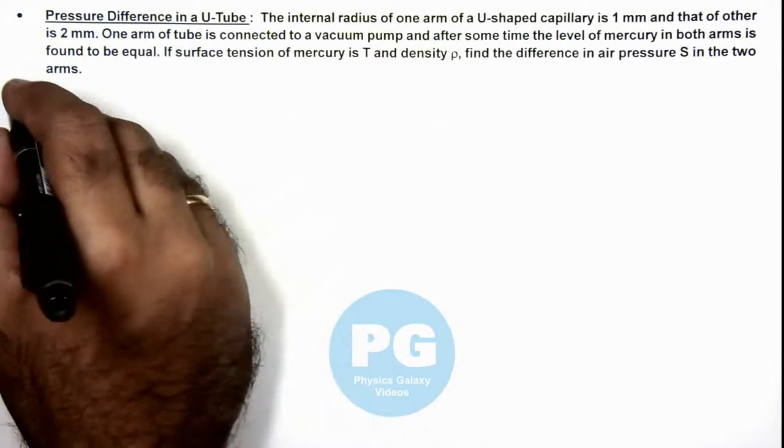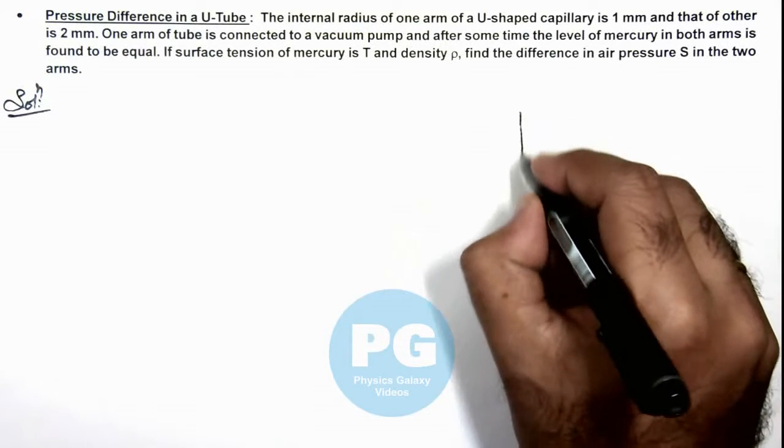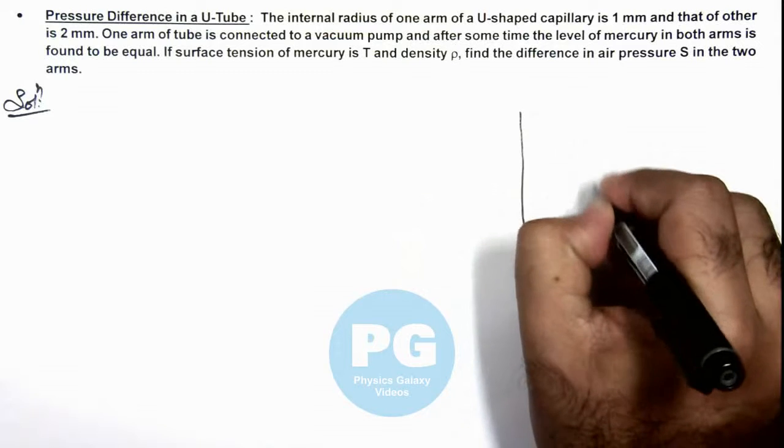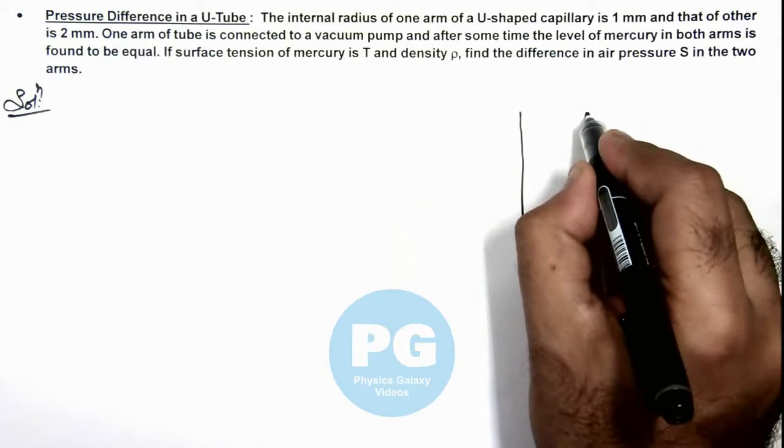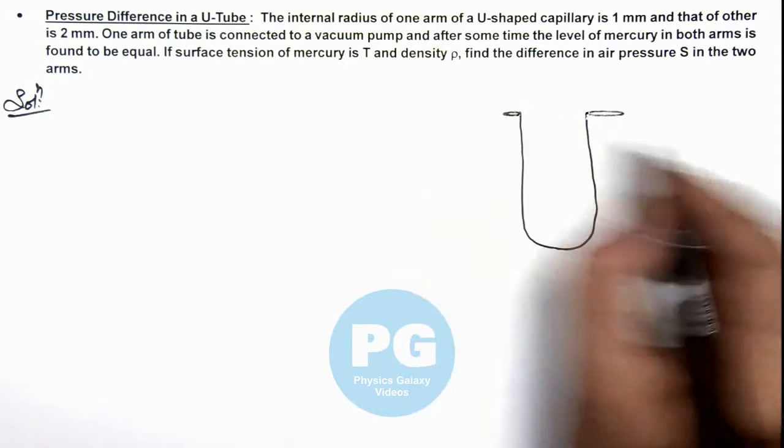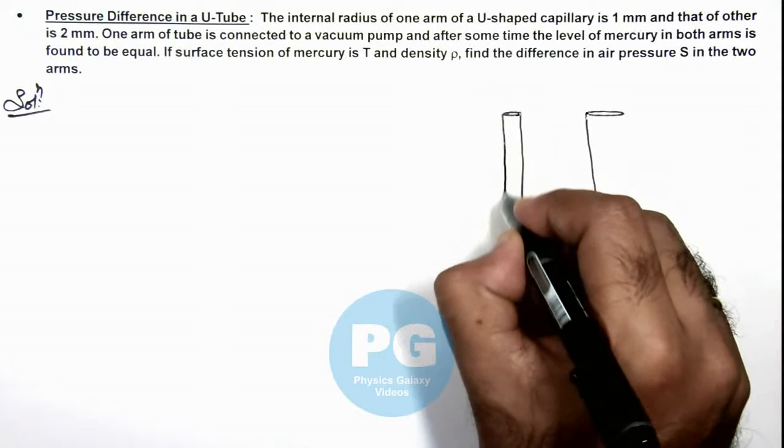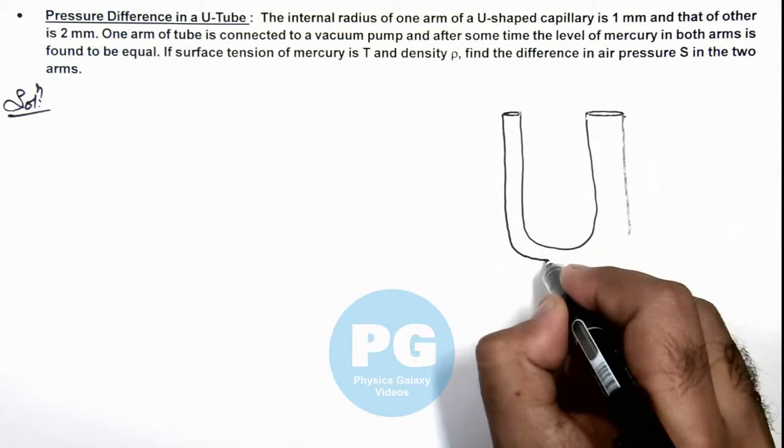First, we can analyze the situation by drawing a figure. We are given a U-tube where one tube arm is of bigger cross-section area and the other is of smaller cross-section area.